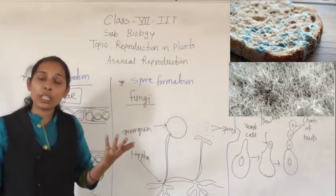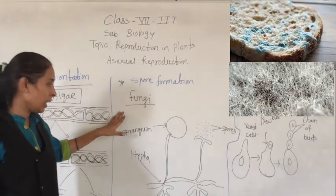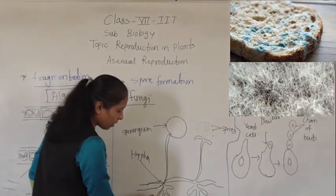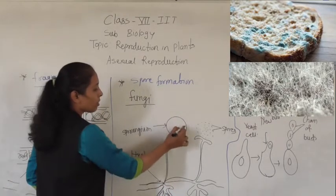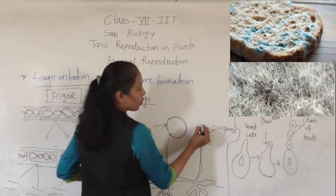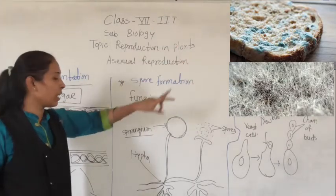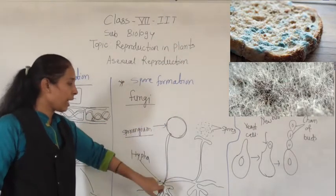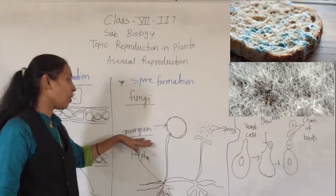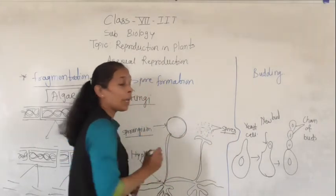Now let's see how fungi appears on bread and how fungi reproduces. Here is the structure of the fungi. You can see the rhizomes — root-like structures called hyphae. There is also one circular ball-like structure called the sporangium, and inside that sporangium there are many small spores. In bread mold you can observe a circle-like structure — that is the sporangium — and thread-like structures which are hyphae.